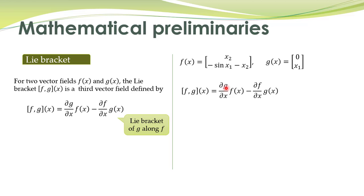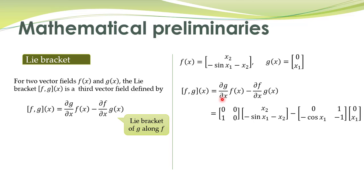Now, g is a vector field and we are taking its derivative with respect to another vector. The derivative of a vector with respect to a vector gives a matrix, and likewise the other term is also a matrix. The partial derivative of g with respect to x means the partial derivative of its first entry with respect to x1 and then with respect to x2, and in the second row, the partial derivative of the second entry with respect to x1 and x2. So this is partial g over partial x.